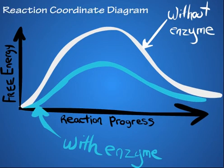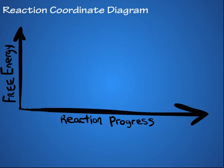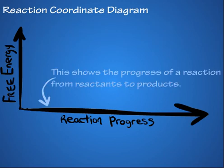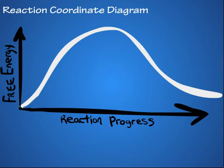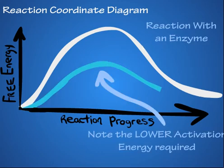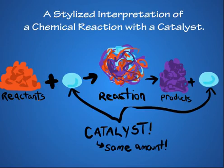This is a reaction coordinate diagram. Today, we'll compare two reactions: one without a catalyst and one with a catalyst. This side shows how much energy is needed to run the reaction as it progresses, and this side shows the progress of the reaction. This curve shows the progress of a reaction without a catalyst, and this curve shows the progress of a reaction with a catalyst. Notice how the catalyst lowered the activation energy of the reaction. As you can see from this diagram, the catalyst is not consumed by the reaction. Rather, it simply speeds up the reaction.